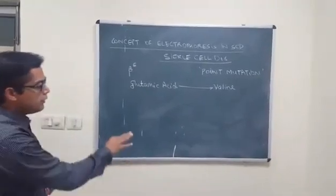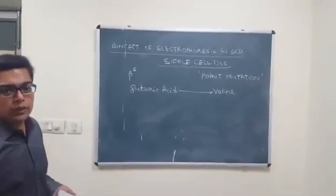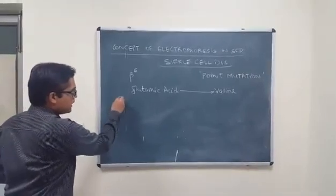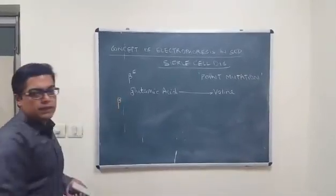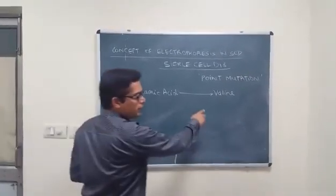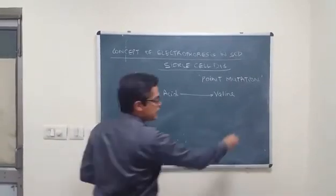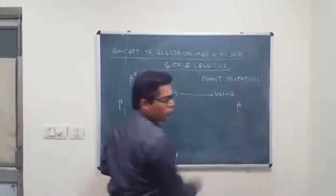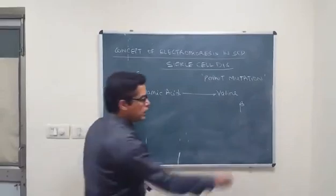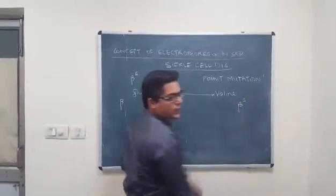If I talk about the representation of the beta globin chain in a normal individual, that is going to be represented simply as plain beta. Whereas in a patient suffering from sickle cell disease, this particular beta globin chain is going to be abnormal, and that is what is represented as the beta-S chain.